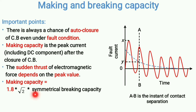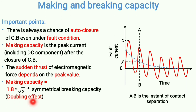The formula for making capacity: first, multiply the symmetrical breaking capacity by √2. Symmetrical breaking capacity is X/√2, so multiplying by √2 gives X — the maximum value of the symmetrical fault current. Then multiply X by 1.8 to account for the DC component. The reason for 1.8 relates to the doubling effect — all these topics are interrelated and vast.